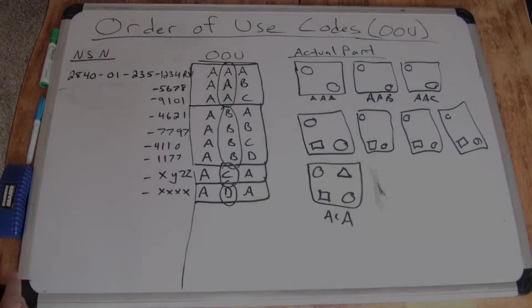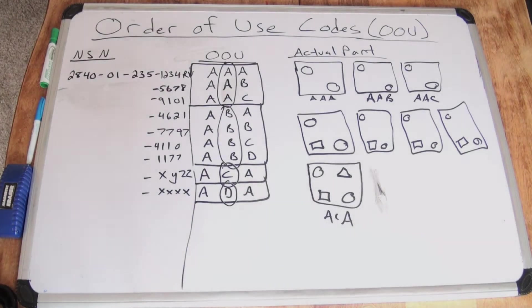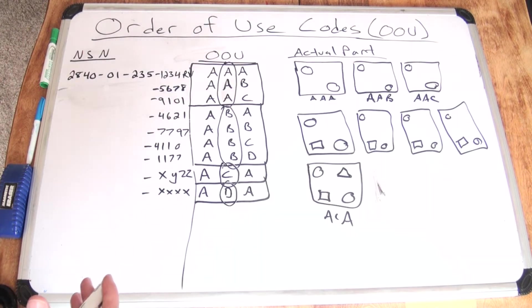I created this chart to describe some order of use codes and examples to give a better feeling of what they actually are. So what order of use does is it interrelates stock numbers. It gives you the relationship between the stock numbers, namely if it's a one-way interchangeable stock number or a two-way interchangeable stock number.